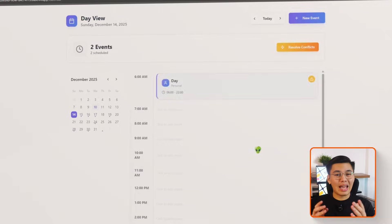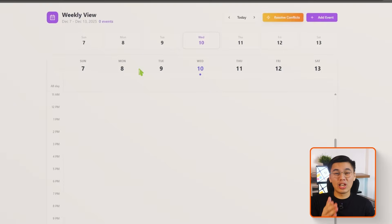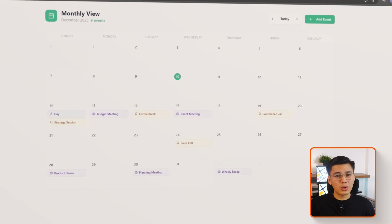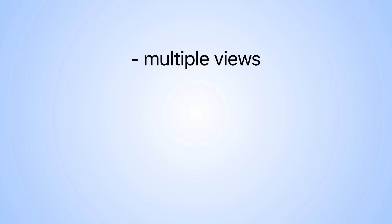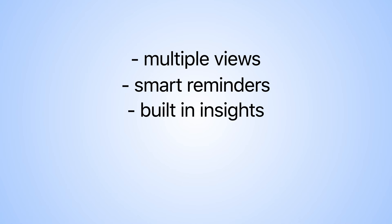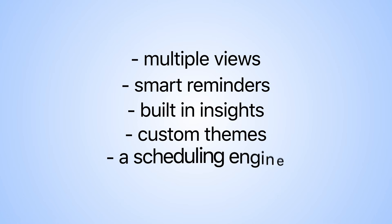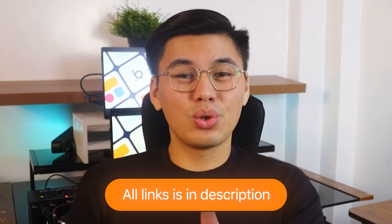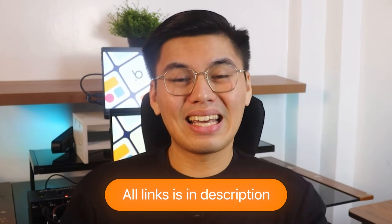At this point, the dynamic calendar app is polished, fully functional, and genuinely ready for real-world use. Something most people think requires a full engineering team is now something you can put together in minutes. And it's not just a calendar — it's a system. Multiple views, smart reminders, built-in insights, custom themes, and a scheduling engine that cleans up conflicts before you even notice them. So when your day starts to scramble itself, this is the tool that snaps everything back into place. Thanks for watching and I'll see you in the next one.